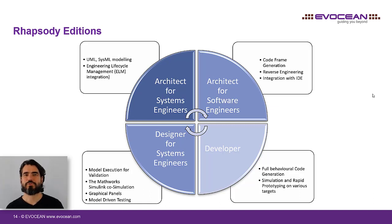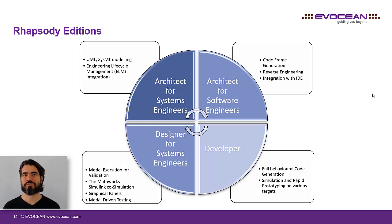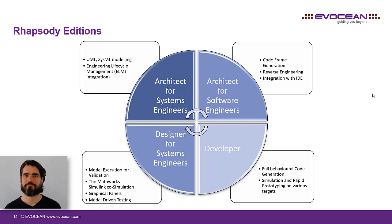The high-end version for software developers is called the Developer. It comprises all the features of the other editions, but in addition allows you to generate and compile full behavioral production code for various embedded real-time systems — like VxWorks, Integrity, Linux, and so forth — all inside Rhapsody. You can even run model-driven testing on a real target.